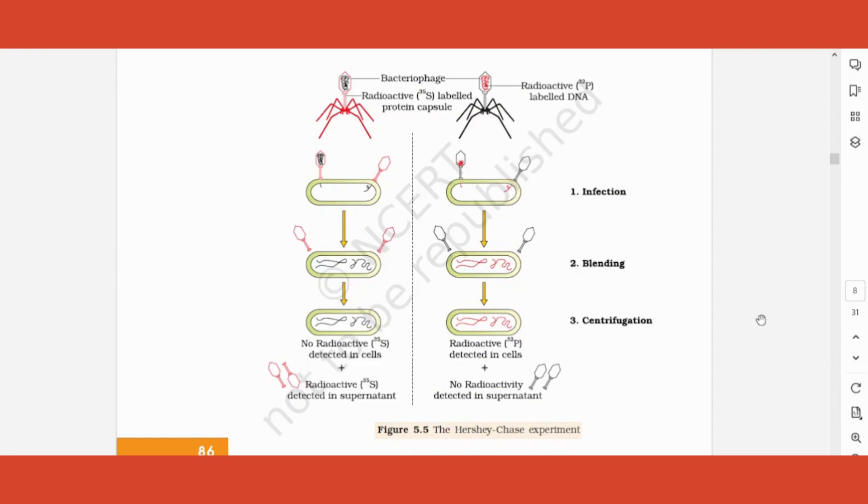Hello students, welcome back to my channel. Today we are going to learn the Hershey and Chase experiment. This is the second video in the chapter Molecular Basis of Inheritance. So let's understand this experiment by Hershey and Chase. They proved that DNA is invariably the genetic material.